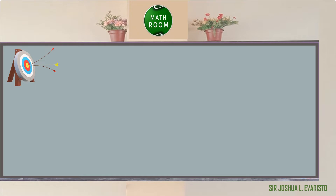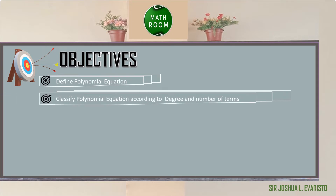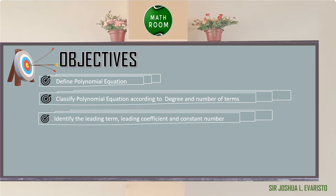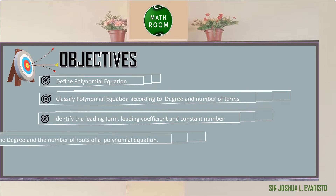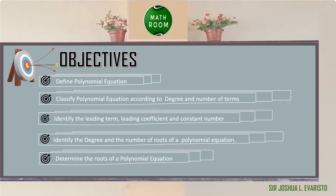Before we proceed, let me present our objectives. At the end of this video, you should be able to define polynomial equations, classify polynomial equations according to degree and number of terms, identify the leading term, leading coefficient, and constant number, identify the degree and number of roots of a polynomial equation, and determine the roots of a polynomial equation. Let's get started.